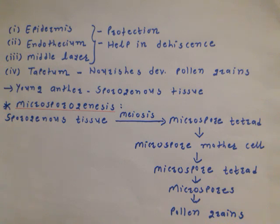In the T.S. of this structure, we can observe these four layers clearly. In a young anther, sporogenous tissue is observed. Through further development, pollen grains are formed here.